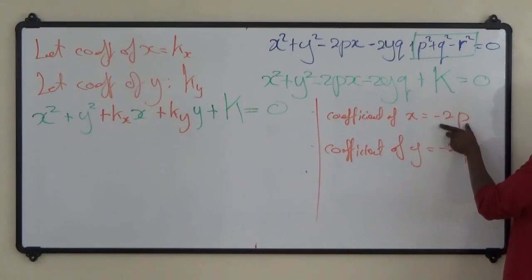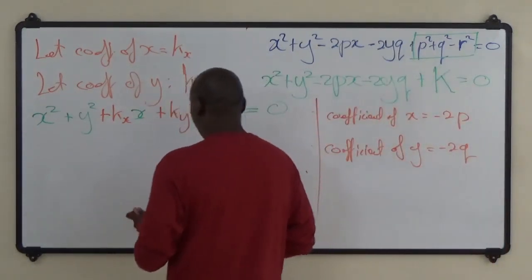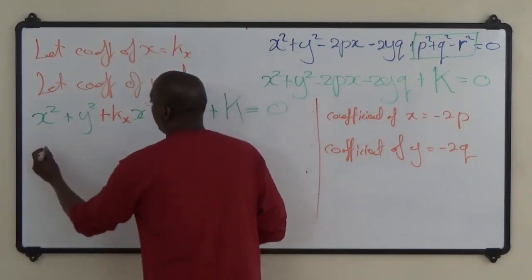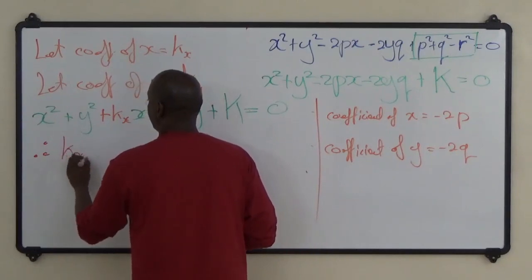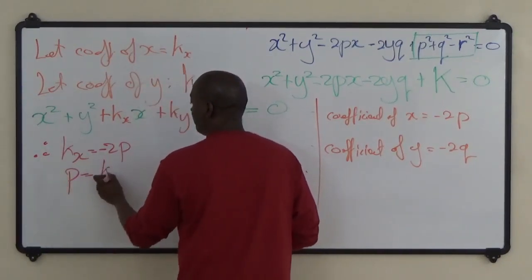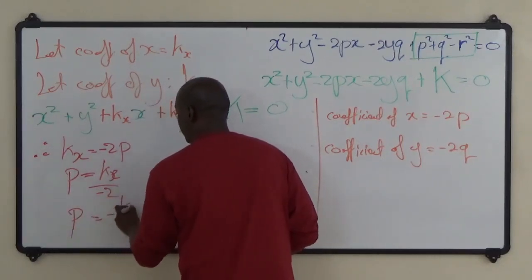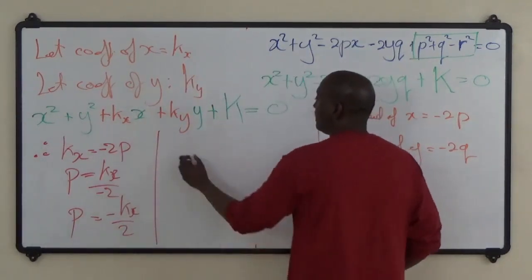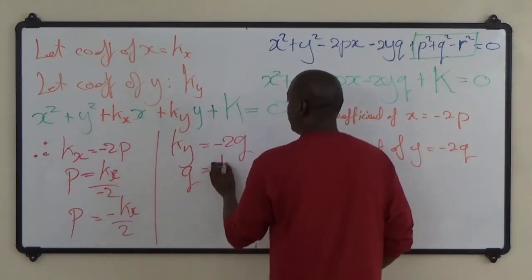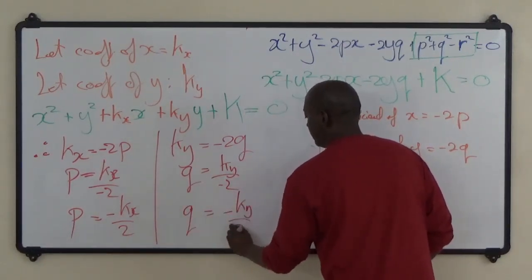Whatever the coefficient of x is, it equals −2p. Whatever the coefficient of y is, it equals −2q. Therefore, we can say that p — the x-coordinate of the center — is minus half the coefficient of x, and q — the y-coordinate of the center — is minus half the coefficient of y.